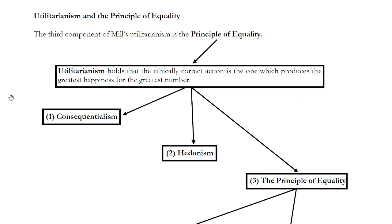Utilitarianism is a moral theory or theory of right action which holds the following: the ethically correct action is whatever produces the greatest happiness for the greatest number. So for the utilitarians like Mill, like Bentham, what ethics fundamentally is about is producing as much happiness, as much pleasure as you can into the world with your actions. And to that extent it very much seems like a very optimistic, cheery moral theory.